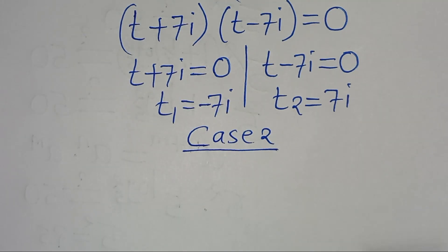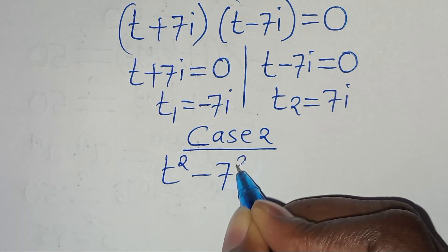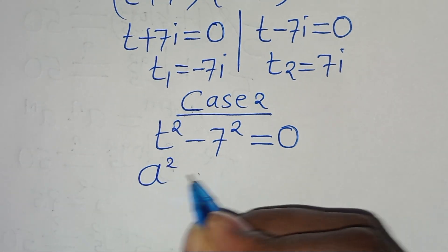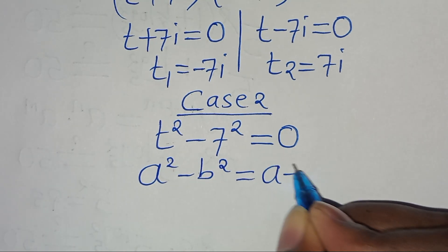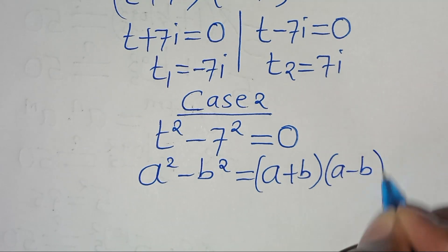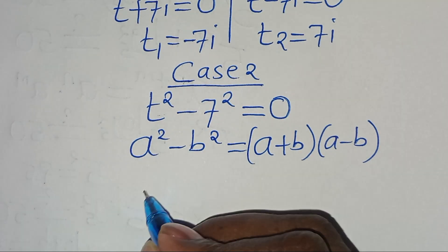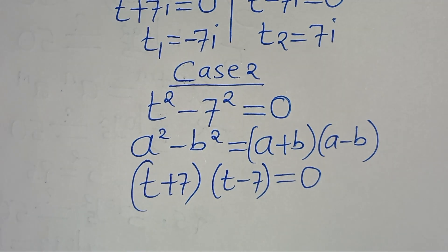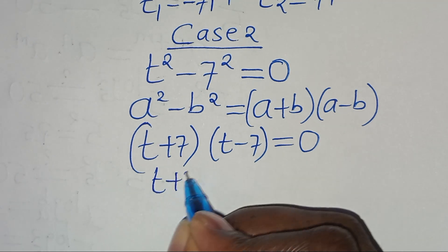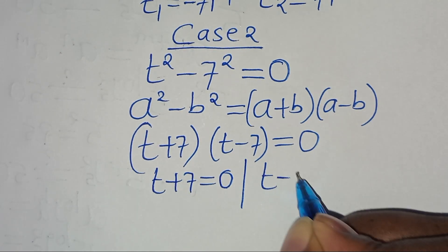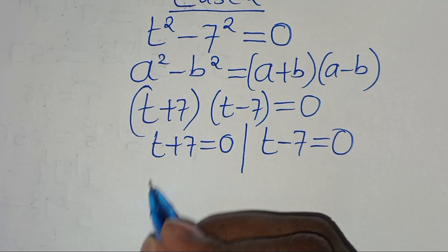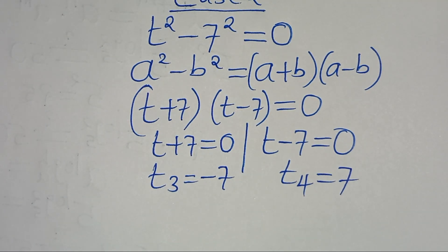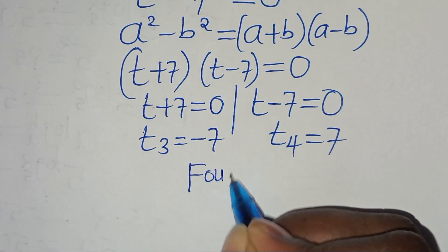In Case 2, t squared minus 7 squared equals 0. This is in the form a squared minus b squared, which factors as (a plus b)(a minus b). So we have (t plus 7)(t minus 7) equals 0, giving t₃ equals minus 7 and t₄ equals 7.